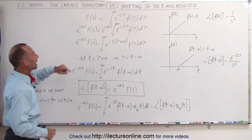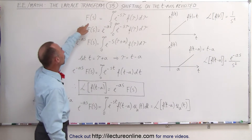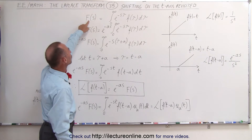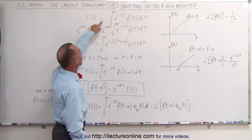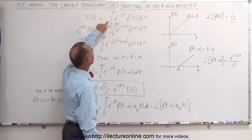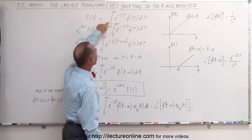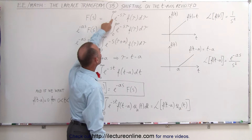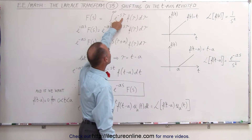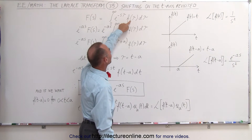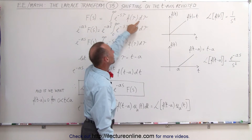So here we have the familiar equation where the transfer function in the S domain is equal to the integral from zero to infinity of e to the minus st times the function of t dt.